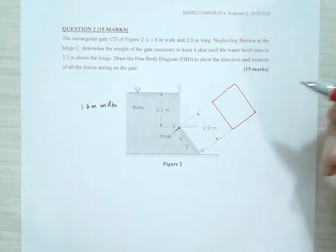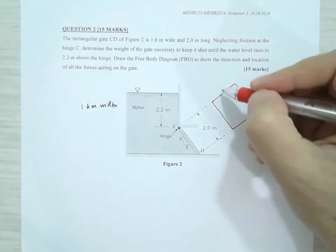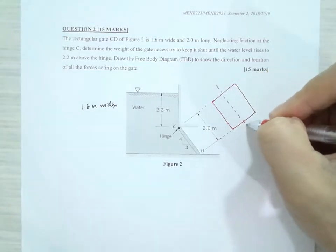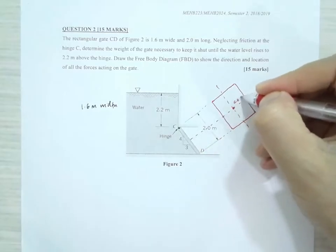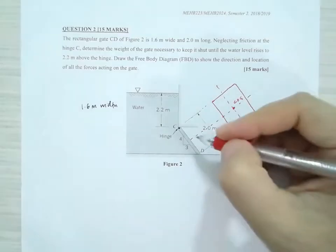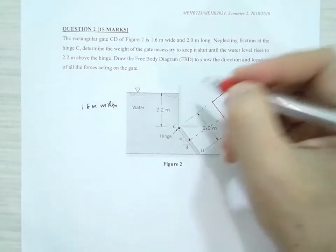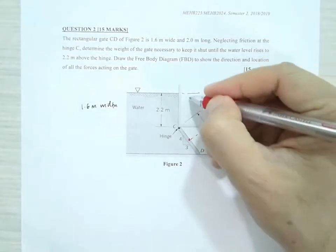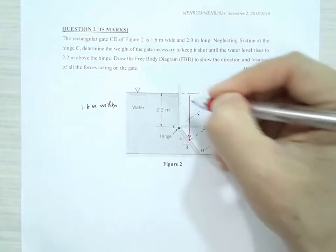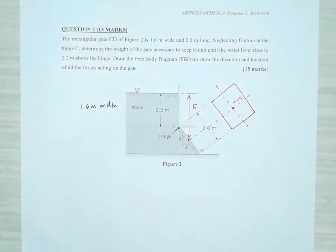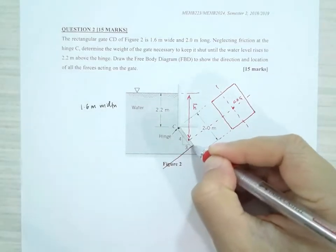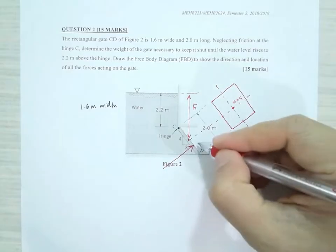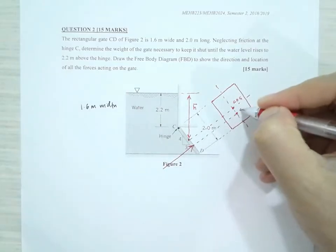First of all, we need to find the center of gravity, the COG, which is the origin. It will be in the middle, so this will be the COG. Having known that, this will be our H-bar. The hydrostatic force will be acting through here in that direction, through the COP.